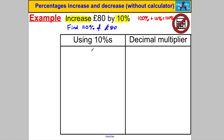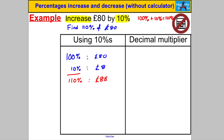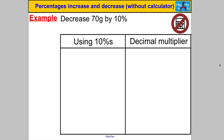So let's find 110% of £80 using tens. 100% is £80. 10% is £80 divided by 10 = £8. Therefore 110% = £80 + £8 = £88. Using the decimal multiplier we would do 1.10 × 80, which also gives £88.